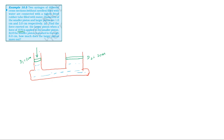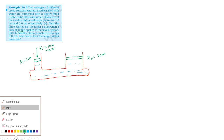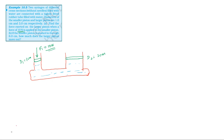The force on the smaller piston F1 is 10 newton. Using Pascal's Law: the pressure exerted at a point on a liquid is equally distributed to all points of the liquid. So the pressure on the smaller piston equals the pressure on the second piston.